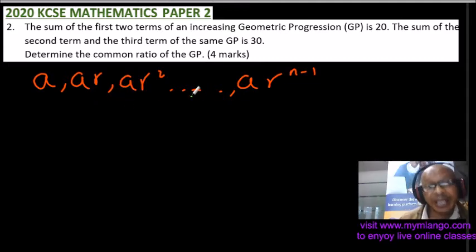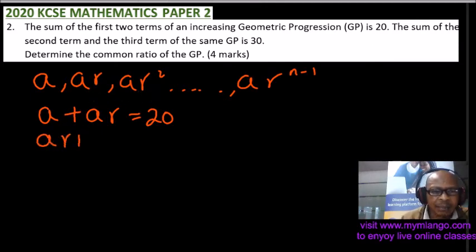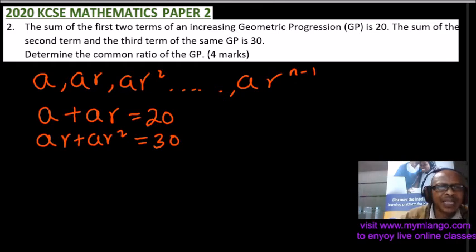We are told the sum of the first two terms: a + ar = 20. Then the sum of the second and third terms: ar + ar² = 30. With that, we can work this out and get both a and r.